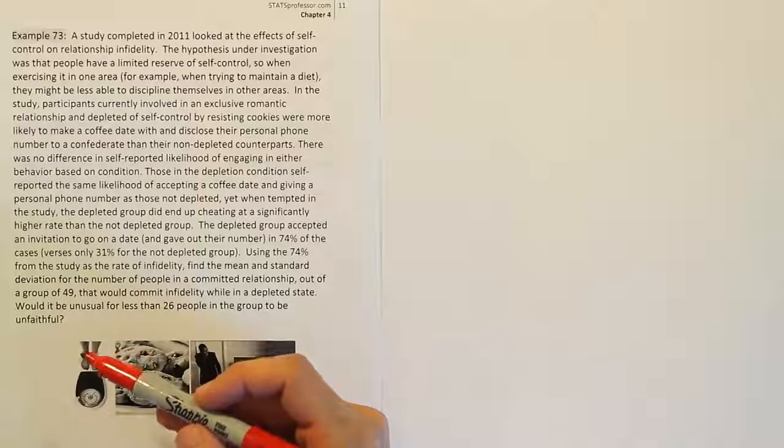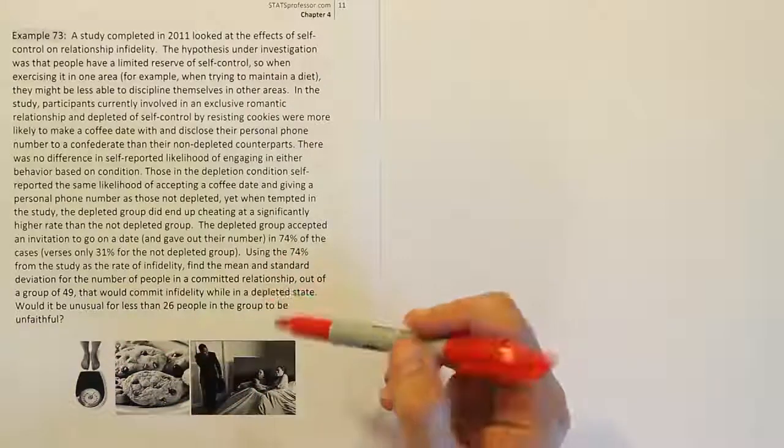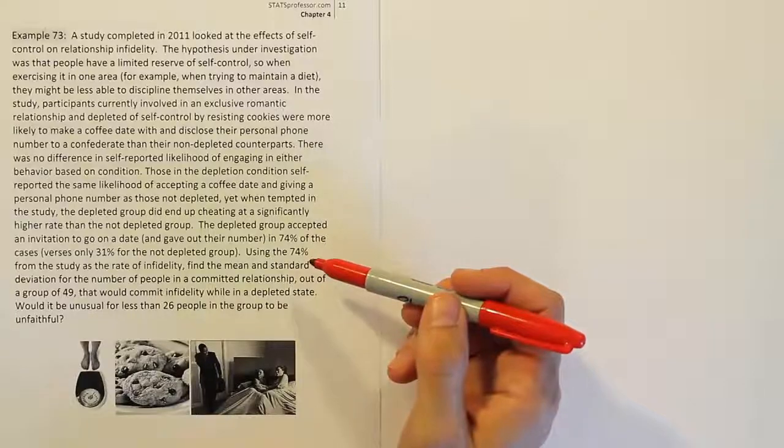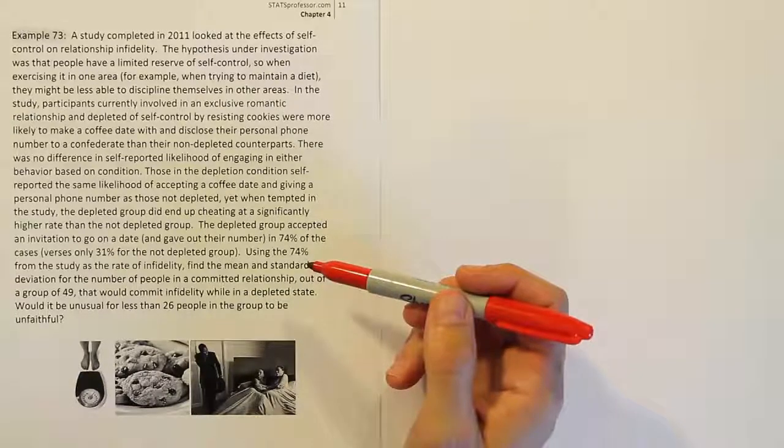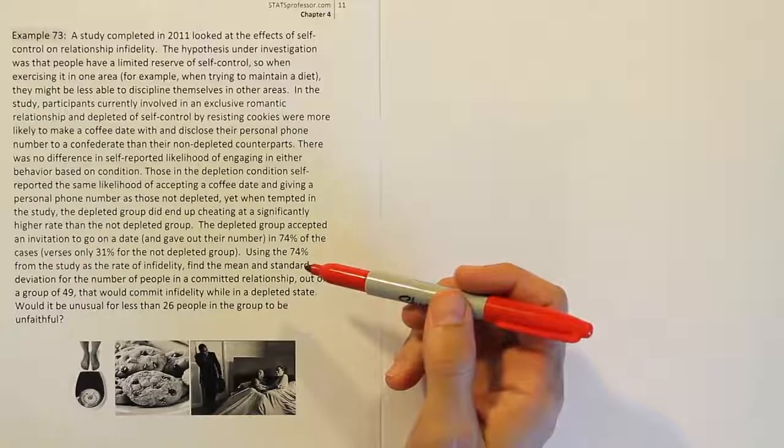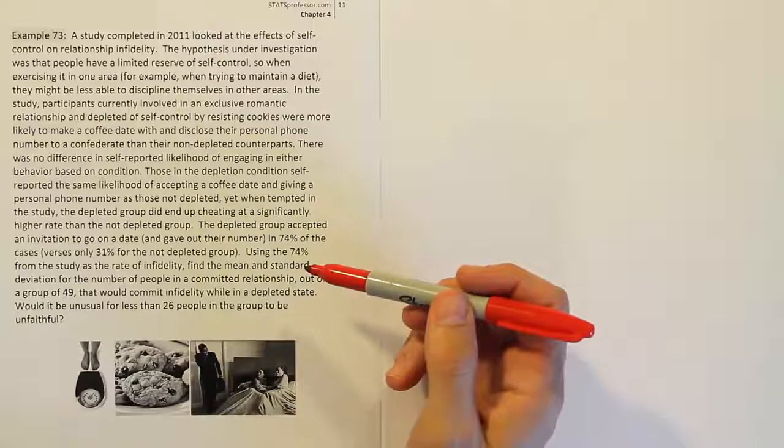And then we're going to end up having a constant probability of success in the problem if they're estimating that rate to be 74 percent. And then finally, the trial should be independent because if one individual randomly chosen is going to cheat, that shouldn't affect the likelihood of another person cheating, assuming that everything is done in a way where they're not able to influence each other's behavior.